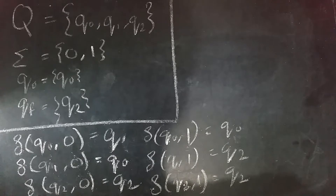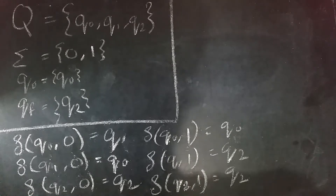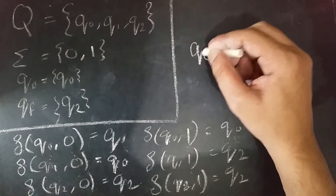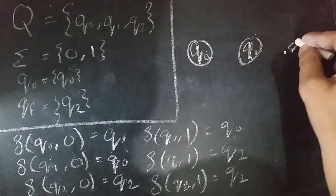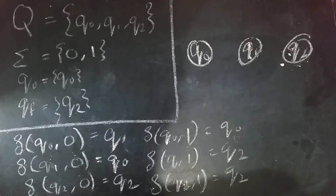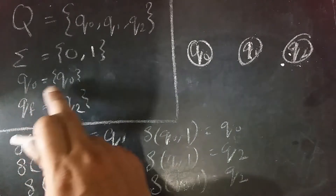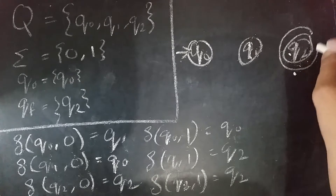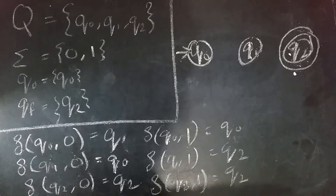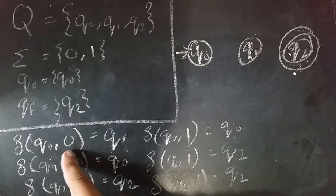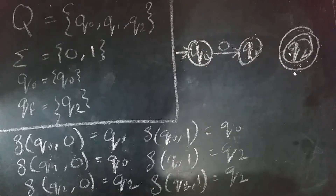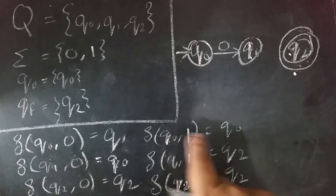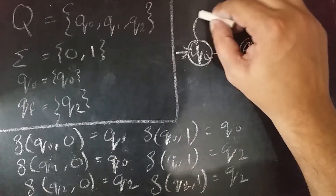There are other ways to represent a finite automata. The second way is to represent using a transition diagram, which we use mostly. In a transition diagram, we draw a diagram of all the transitions. We draw Q0, Q1, and Q2. The initial state Q0 is represented by a small arrow, and the final state Q2 is represented by a concentric circle. On Q0, if the input is 0, go to Q1. On Q0, if the input is 1, then go to Q0, which means a self-loop.